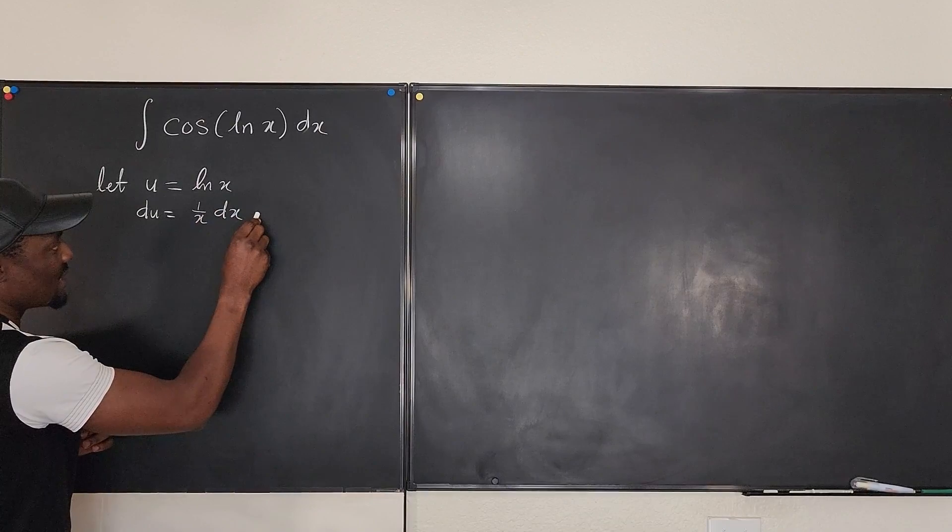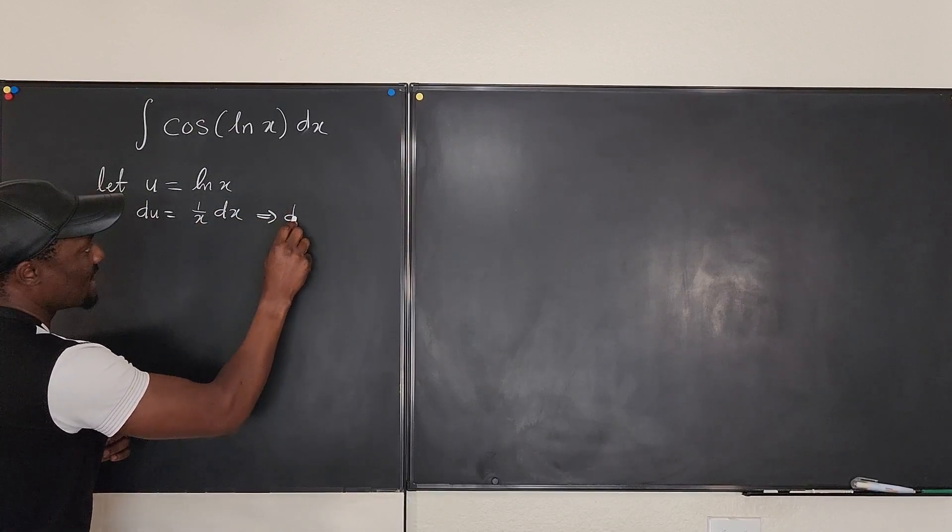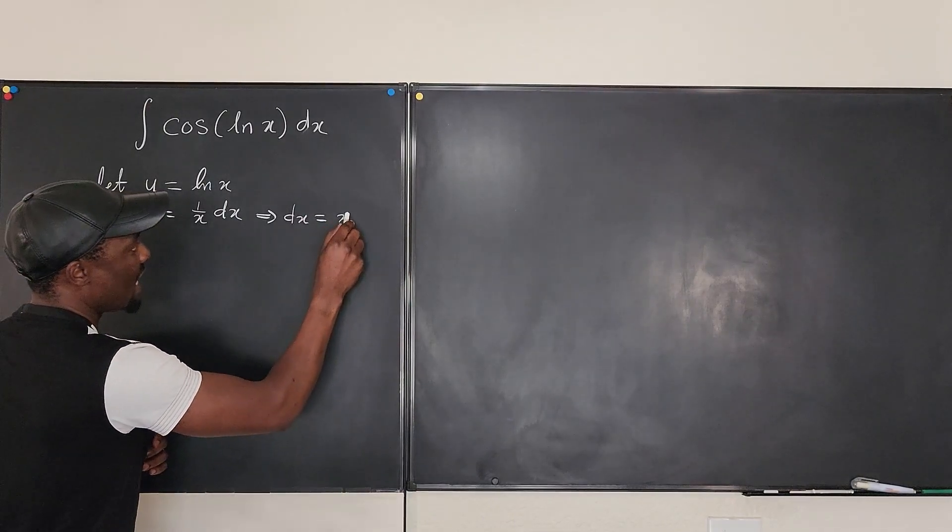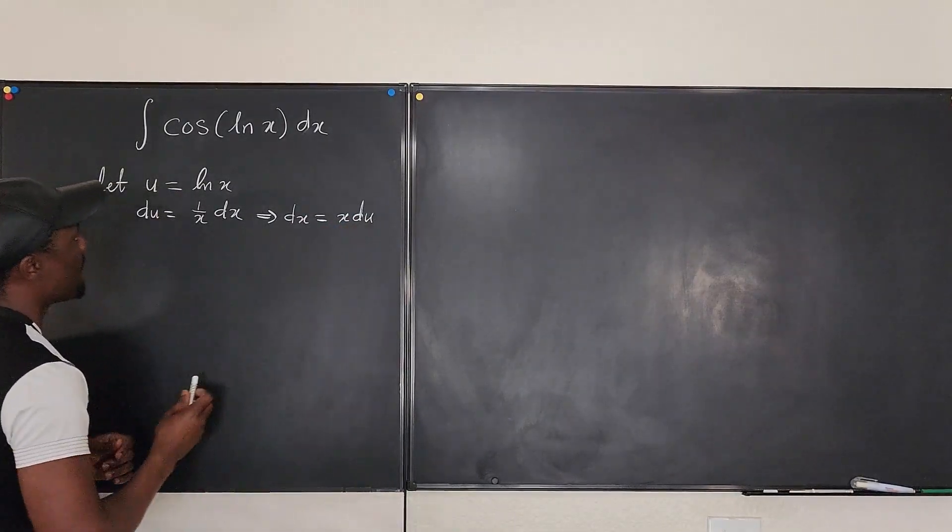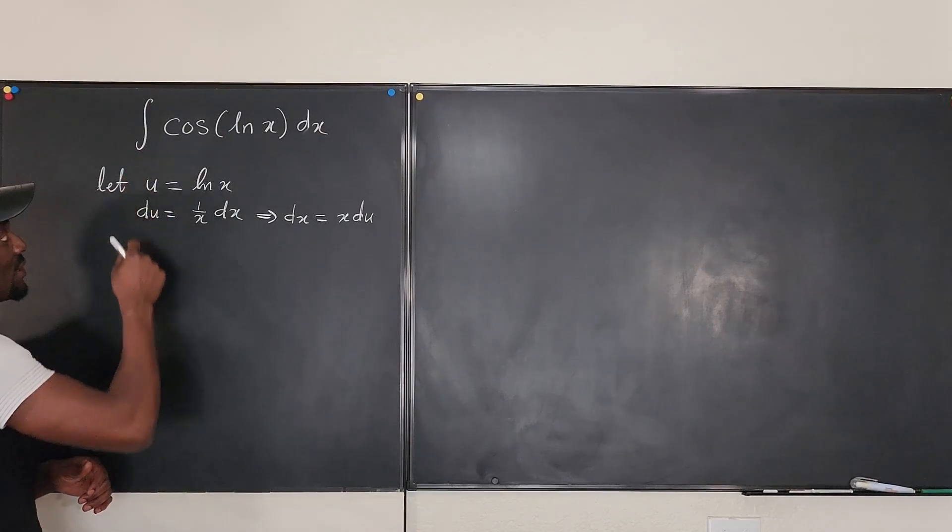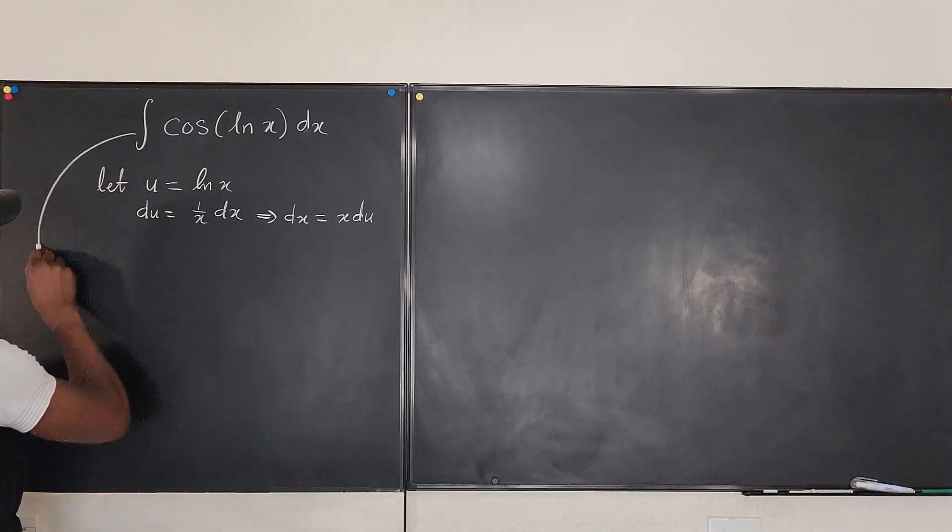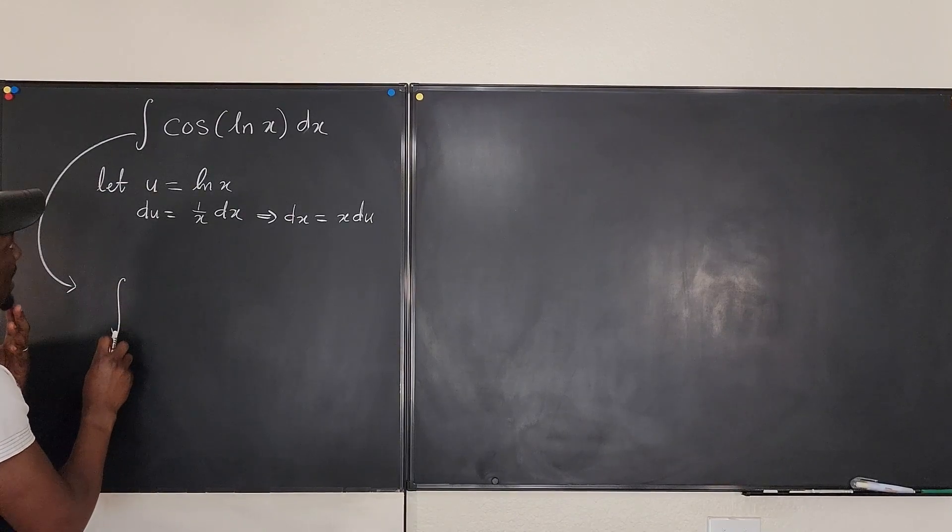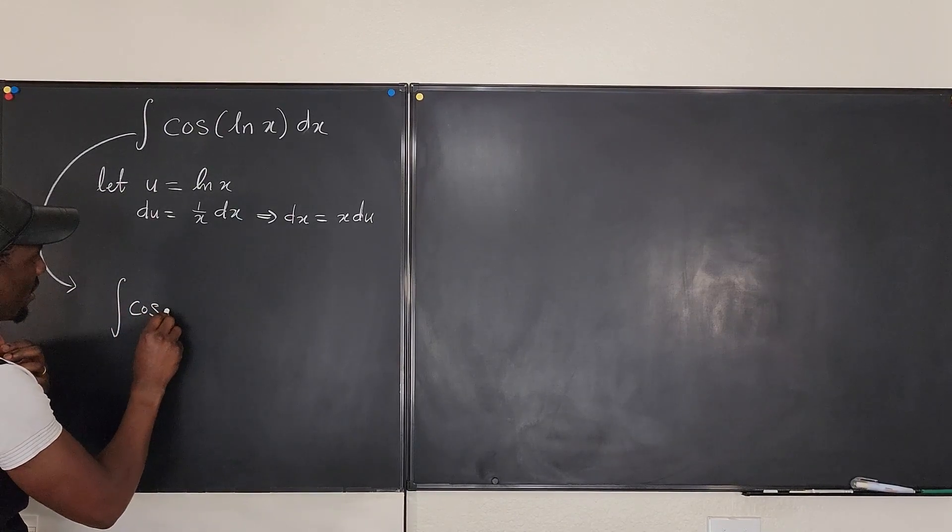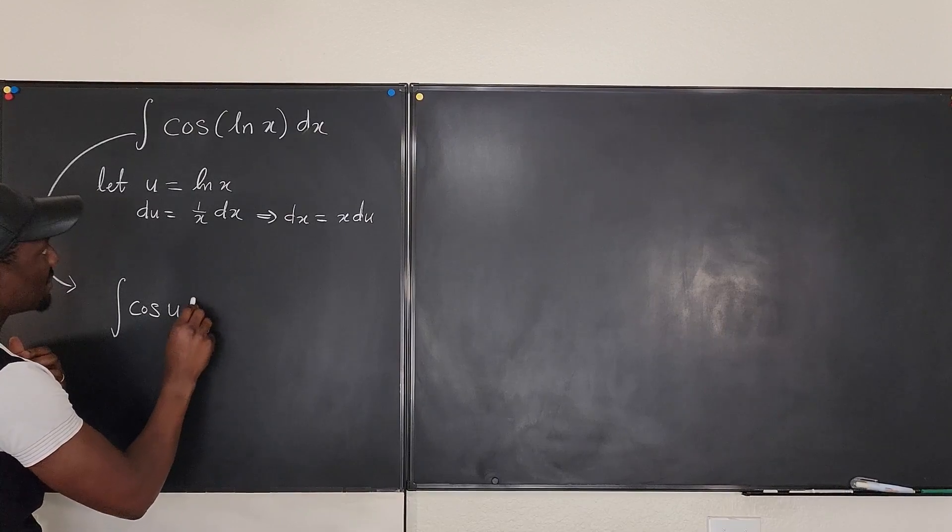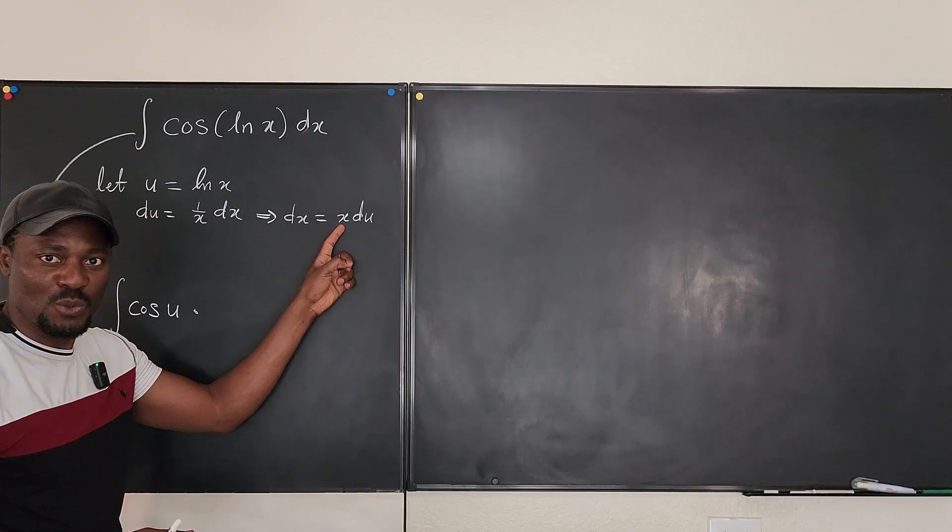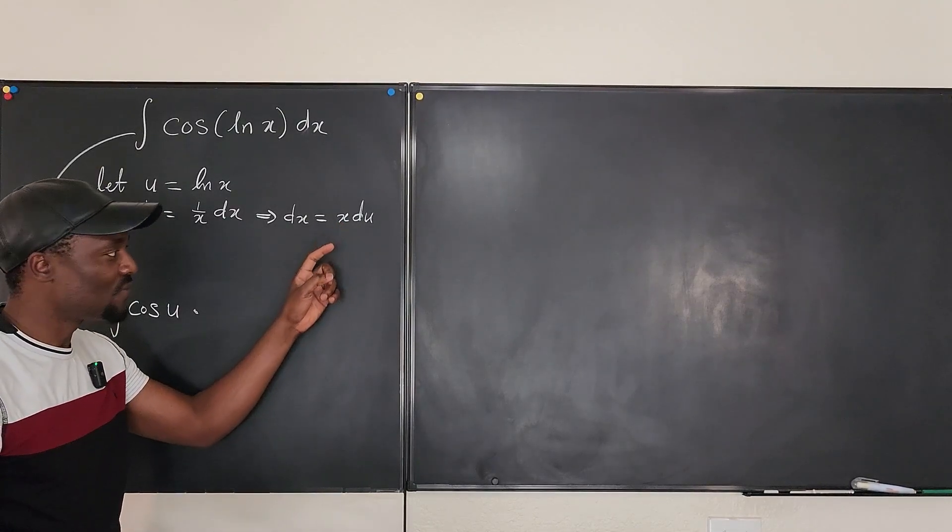Wait, wait. Let's do this. Let's isolate dx. This implies that dx can be replaced with, if you multiply both sides by x, you're going to get x du. So we're still trying to rewrite this expression. This expression here, when it comes down here, is supposed to be something like this: the integral of the cosine of u multiplied by dx, which is x.